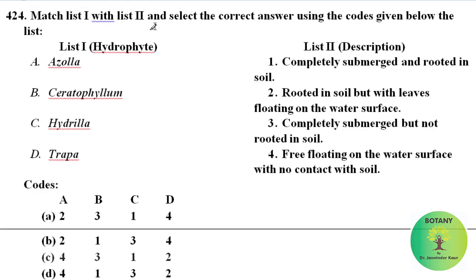Match list 1 with list 2 — names of hydrophytes are given in list 1 and descriptions in list 2. Azolla is free-floating on the water surface with no contact with soil. Ceratophyllum is completely submerged but not rooted in soil. Hydrilla is completely submerged and rooted in soil. Trapa is rooted in soil but with leaves floating on the water surface. The correct option is option C.